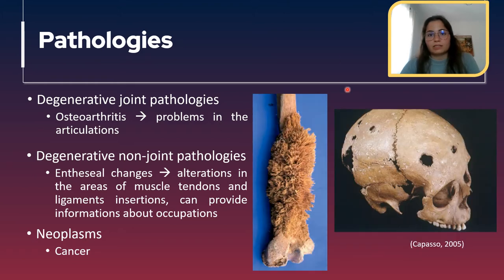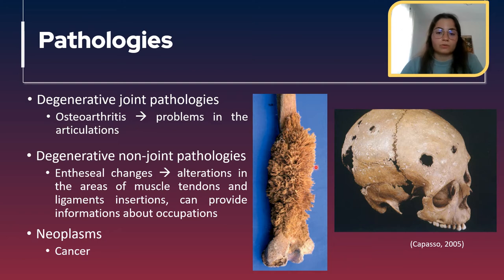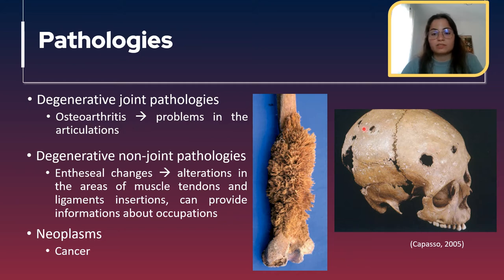In this image of the ulna you can see this growth which is not normal — this is an enthesial change usually related to fishing or using bows. Finally, we have neoplasms, which are cancers. These can manifest by creating or destroying bone. In this humerus you can see abnormal bone growth, and in this skull you can see destructive lesions — both cases are from neoplasms.